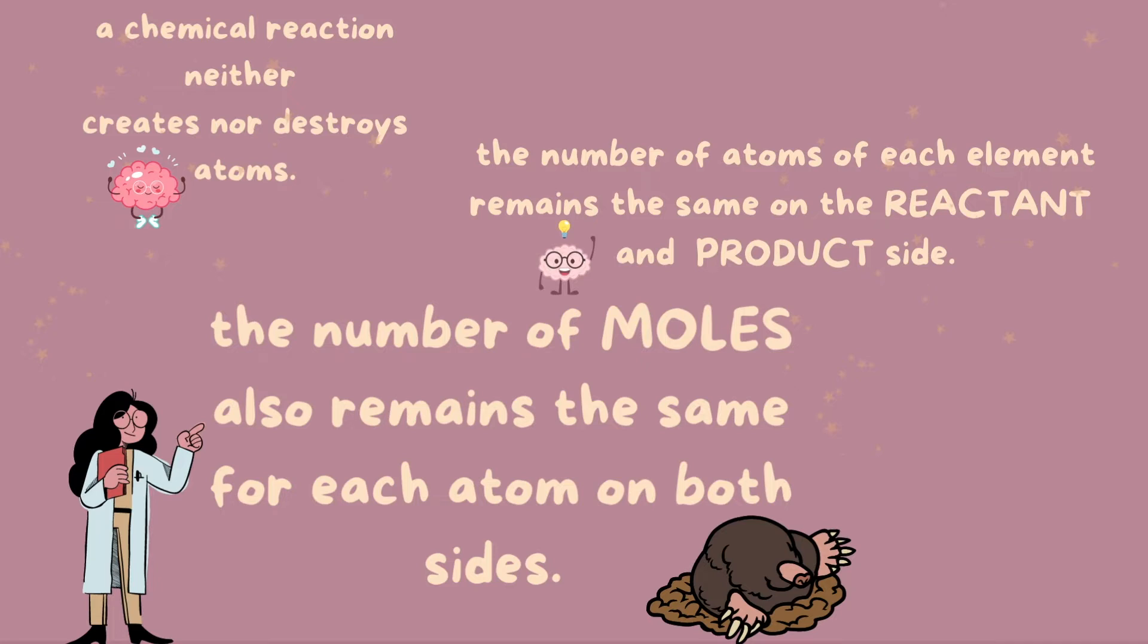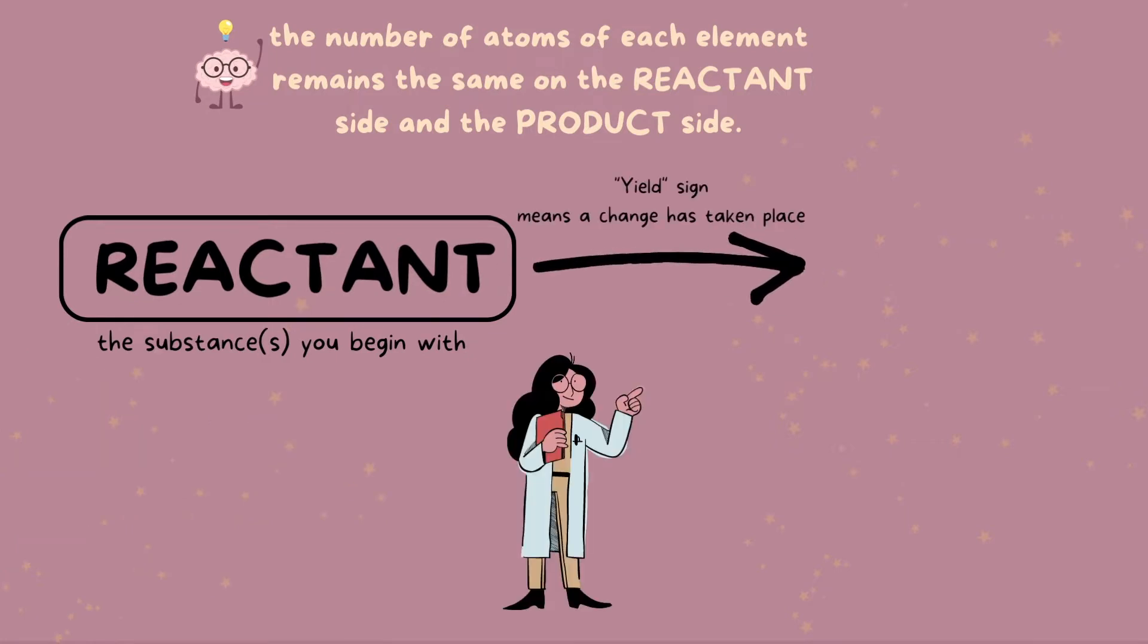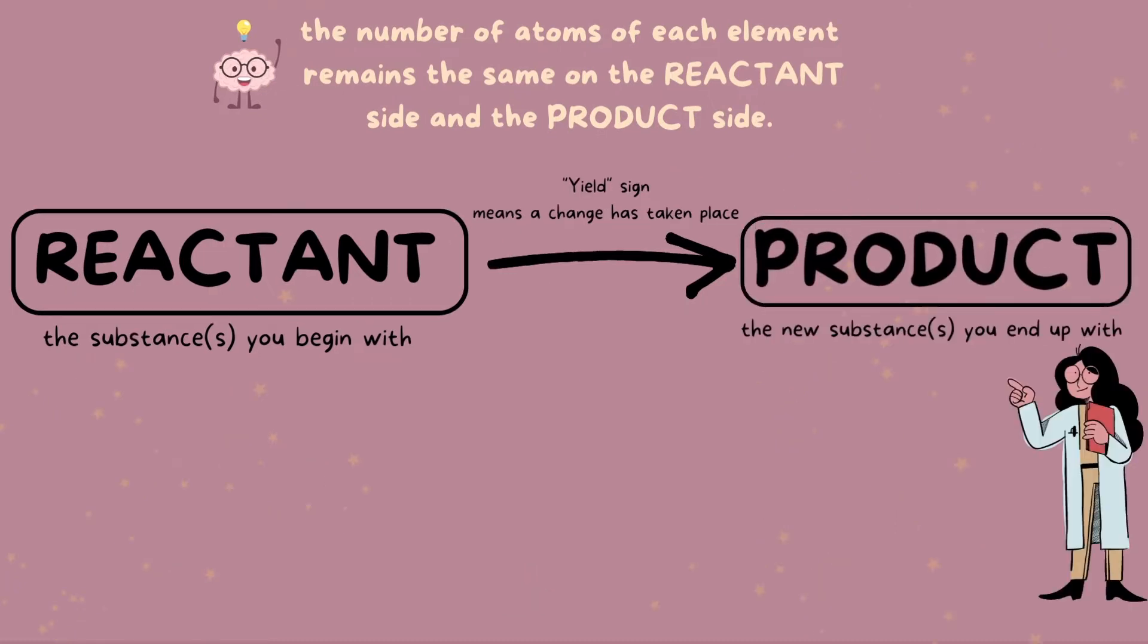We have two sides of a chemical equation. We start on the left with the reactants. These are the substances or substance you start with. The yield symbol indicates a chemical reaction has taken place. And on the right, we have the product, which is the substance or substances we end up with.